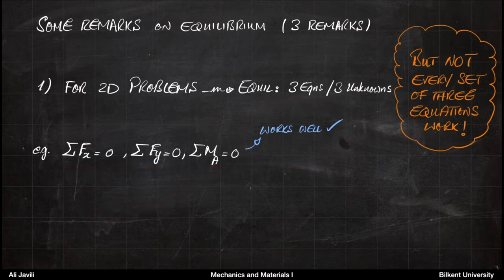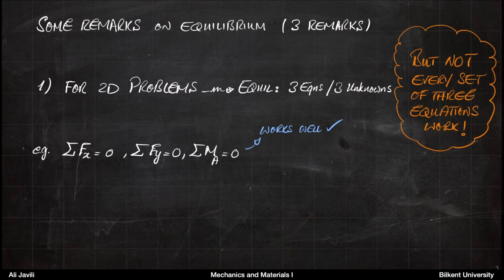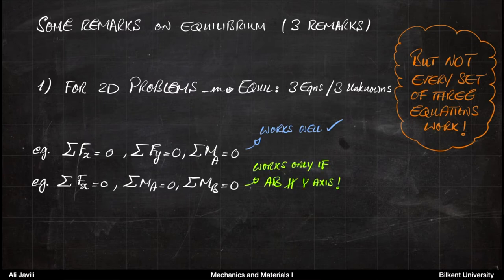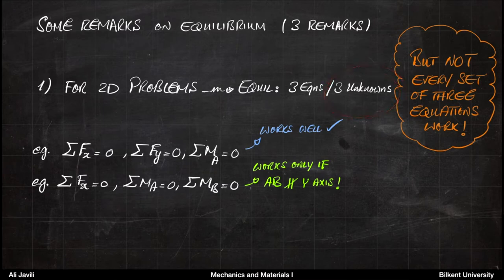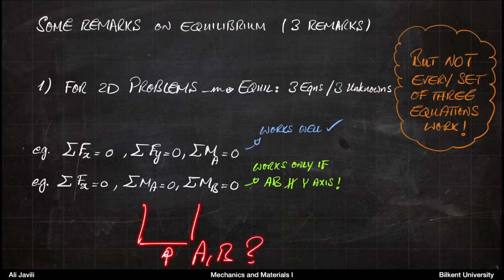As far as possible you should use that standard combination. But sometimes other combinations are more helpful — the trick is to use those combinations properly so you can still solve your three unknowns. For example, instead of using equilibrium in the y direction and moments about point A, you might replace one equation with a moment equation about point B. This is also three equations and should help you get your three unknowns — but if you are not careful in choosing points A and B, it won't work.